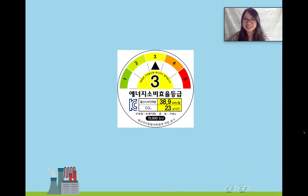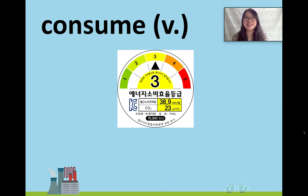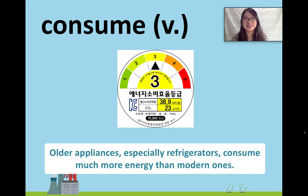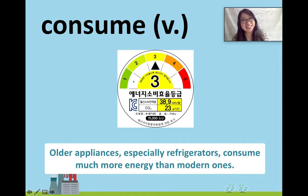Maybe you've seen this sticker before, especially on your fridge or washing machine or an appliance like that. This word is consume. Older appliances, especially refrigerators, consume more energy than modern ones. If it's red, not so good. If it's green, that's very good.